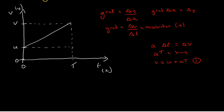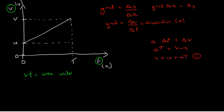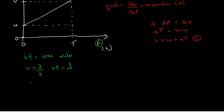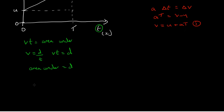The area under a curve or a straight line is represented by the product of the two values on the axes, i.e. vt is equal to the area under the curve or line. Using the formula speed equals distance divided by time, we get vt equals d. So vt, the area under the curve, represents the distance travelled between two times. In SUVAT we use the symbol s for distance because it represents displacement, so s is equal to the area under the line.